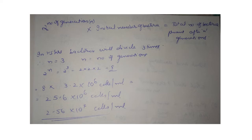So 2 raised to n will be 2 raised to 3, that is 8. So 8 times the initial number of bacteria, that is 3.2 × 10^6 cells per ml, gives you the total number of bacteria present after n generations. That will be 2.56 × 10^7 cells per ml.